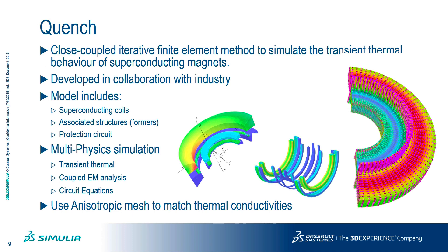The Opera quench module computes the temperature rise of a superconducting magnet during a quench, including the transition to being resistive as the quench propagates through the magnets. In this instance, there is significant anisotropy in the material properties, as thermal conductivity is dominant along the winding direction, requiring specific modelling techniques for efficiency and accuracy.